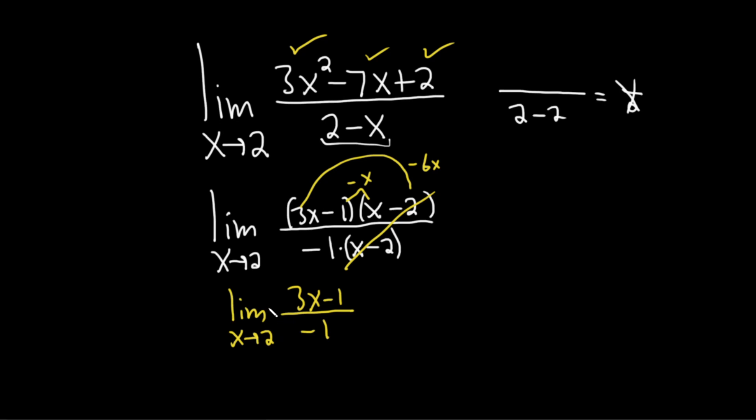So putting a 2 where the x is, we drop the limit sign. Remember, whenever you plug in the number, that's when you drop the limit. When you evaluate the limit, that's when you drop the limit sign. So this is 3 times 2 minus 1, and it's all over negative 1. This is 6 minus 1 over negative 1. So it's going to be 5 over negative 1. So that's negative 5.